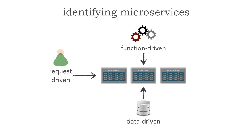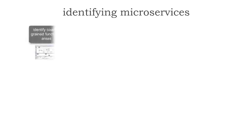The secret to identifying microservices is to do all three of these. Let me show you the flow. The cogs are functional, the cylinders are data, and that glyph image of a person is the business request. Here are the steps involved in identifying microservices.